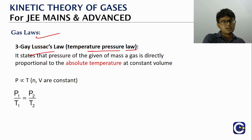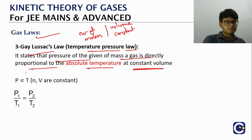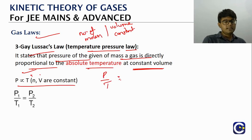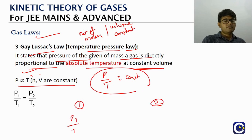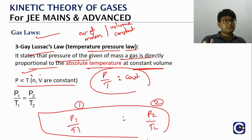Gay-Lussac's law, also called the pressure-temperature law: for a given mass of gas at constant volume, pressure is directly proportional to absolute temperature — P ∝ T. Rearranging: P/T = constant, giving P₁/T₁ = P₂/T₂. This is analogous to Charles' law — there, V ∝ T; here, P ∝ T, with number of moles and volume both constant.